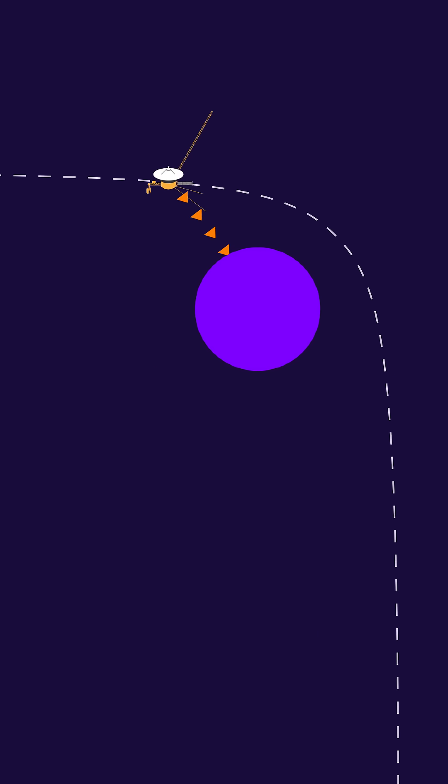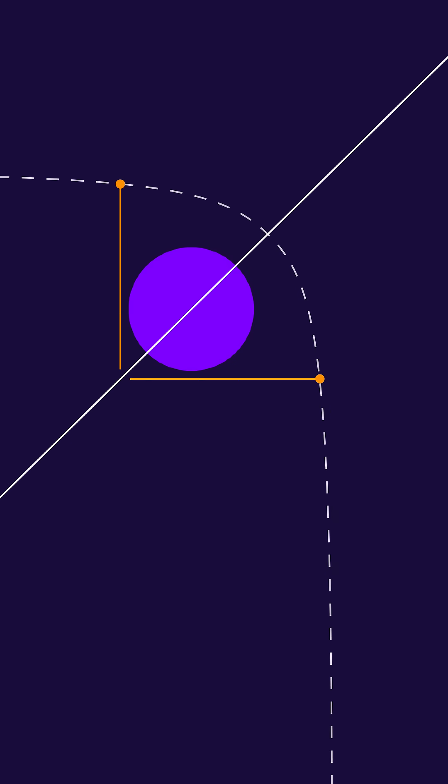But as we are going away we slow down again as the gravity is still pulling on us. That means that at symmetrical points on either side we are going at the same speed. So how do we accelerate?